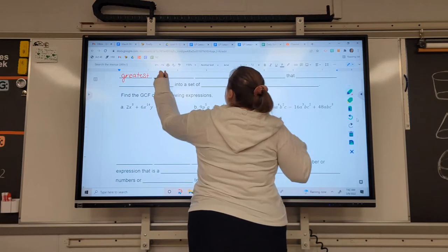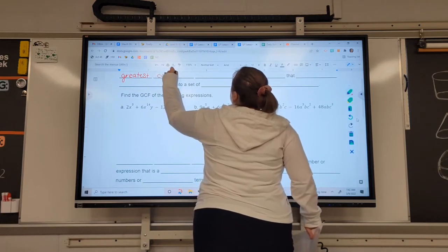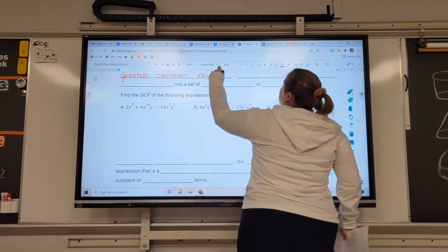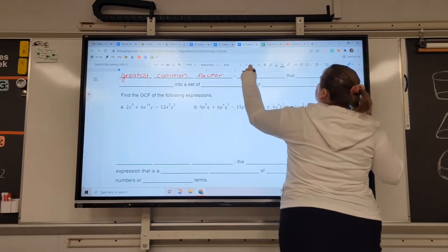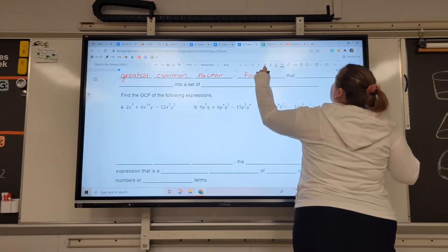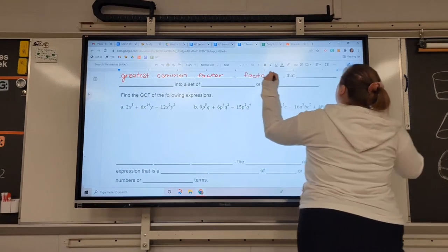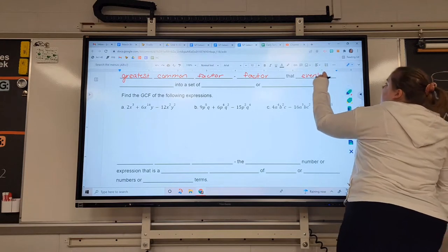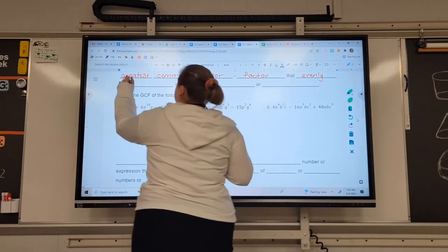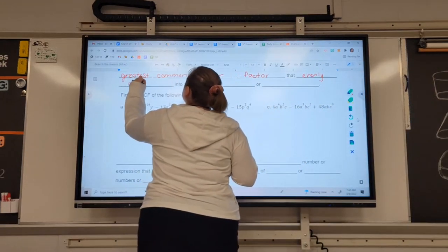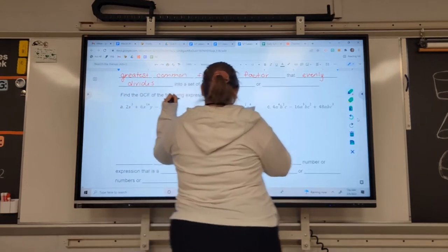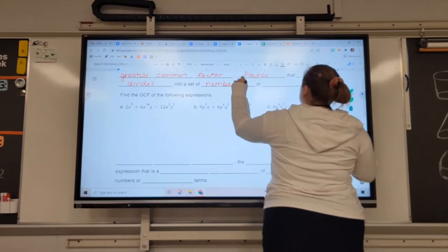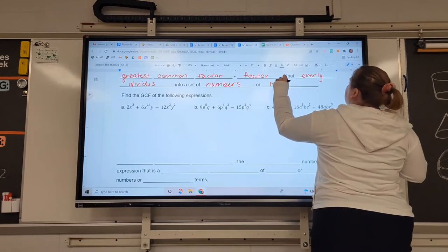So we have the greatest common factor. And by definition, the greatest common factor is a factor that evenly divides into a set of numbers for monomials.